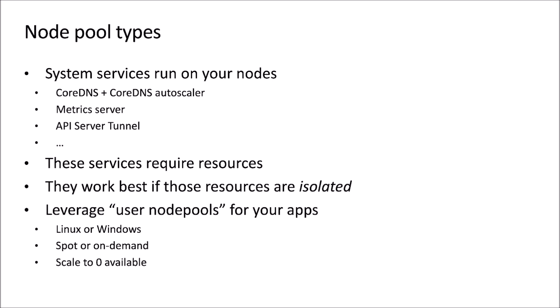We've been making improvements to node pool support. The first is the notion of node pool types. You have system services that need to run on your nodes — things like CoreDNS and its autoscaler, metric server, the tunnel, and others — and these are critical to cluster health. It's a best practice to isolate those components into their own nodes and run applications separately. We've now elevated this into a first-class concept where you can designate a node pool as a system node pool, which is the default one created with the cluster, and subsequent node pools can be created as user node pools.